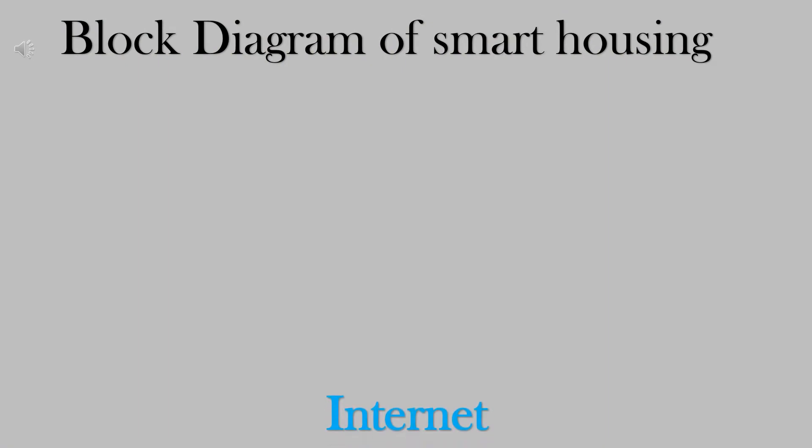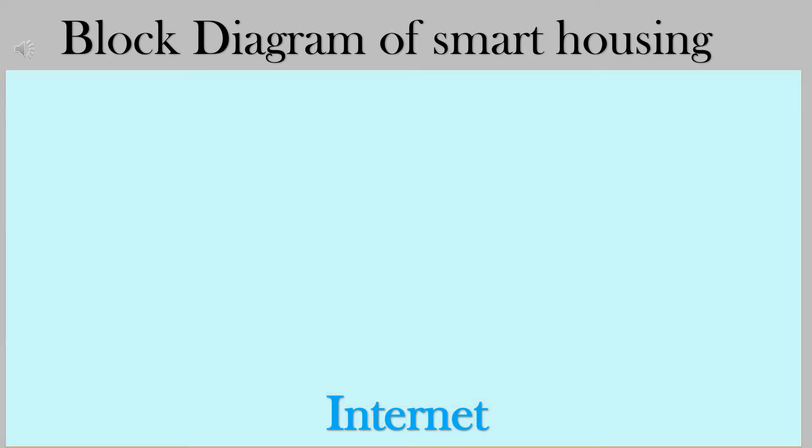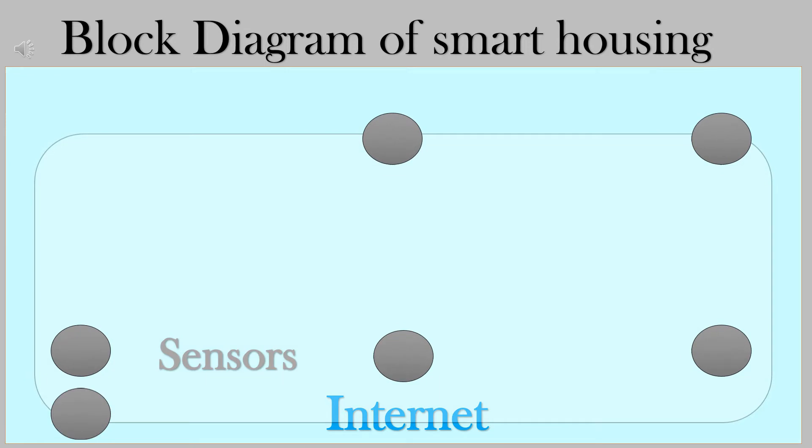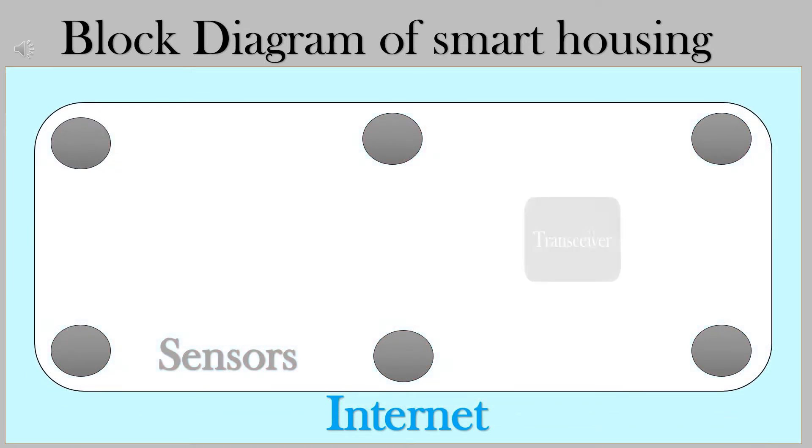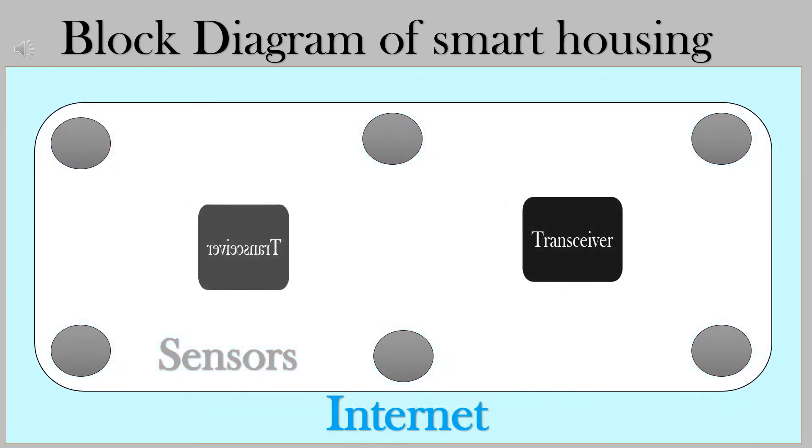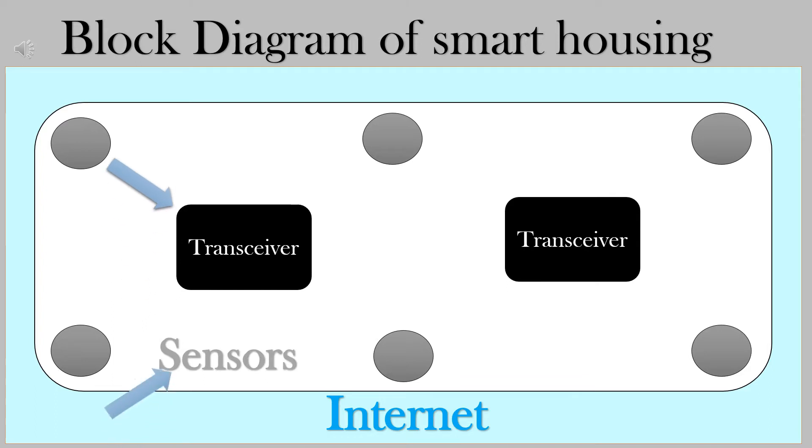Block Diagram. Imagine as if this is a house and the blue colored one represents Internet. And these are sensors which are used to sense their motion.